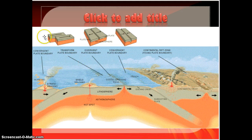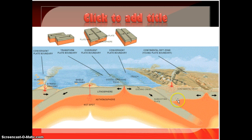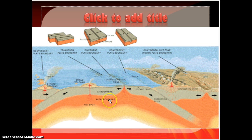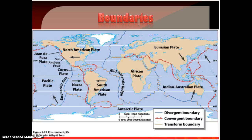So now that brings us to the diagram. We have a subduction zone — that's two convergent plates coming together. Then we have a divergent boundary where we're having seafloor spreading and a ridge forming. And then we have a transform plate boundary where the plates don't connect but are sliding past each other.